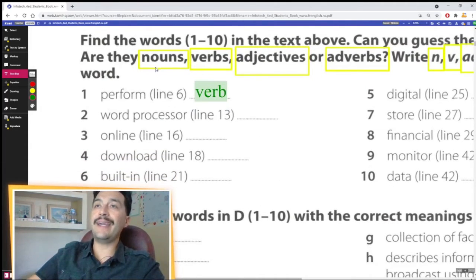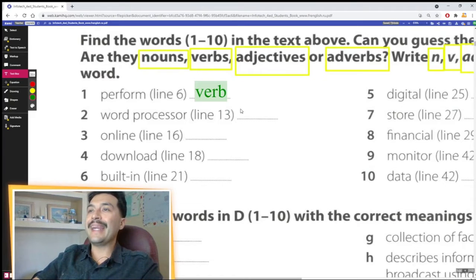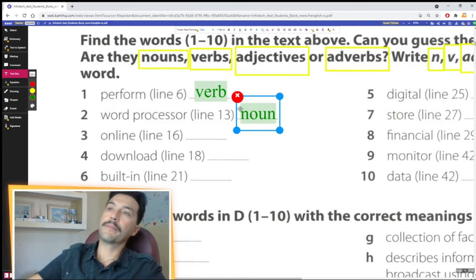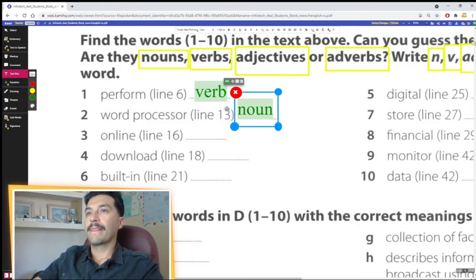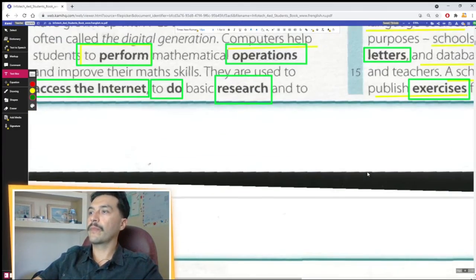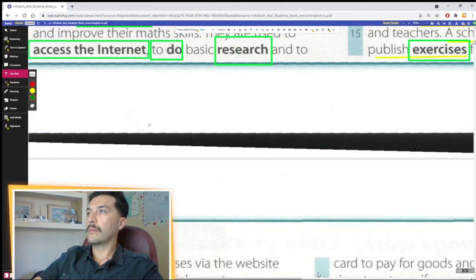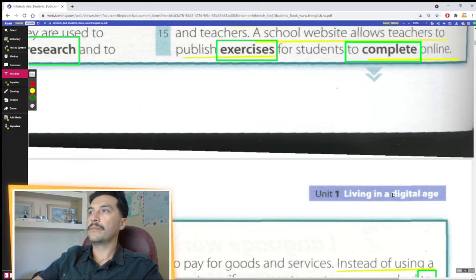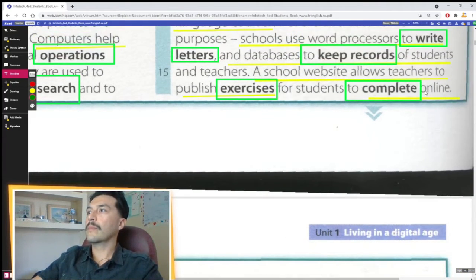Word processor, well it's a thing, it's an object, idea or concept - noun. Online, line sixteen, let's look at line thirteen and line sixteen. A school website allows teachers to publish exercises for students to complete.